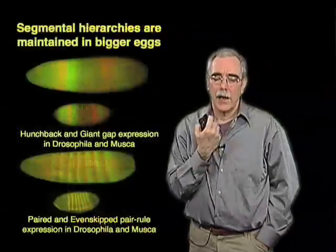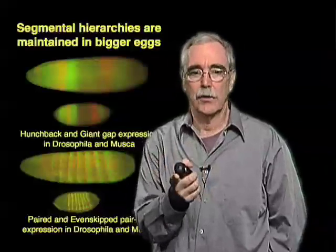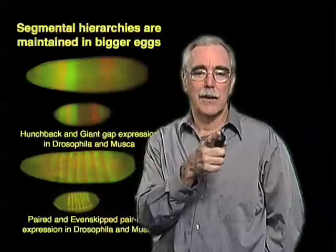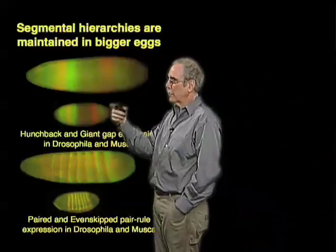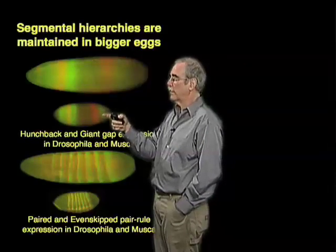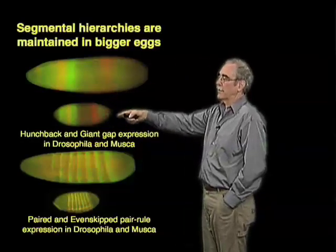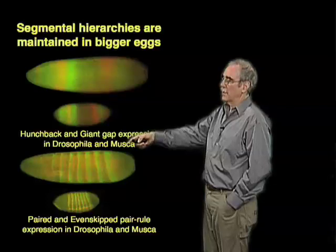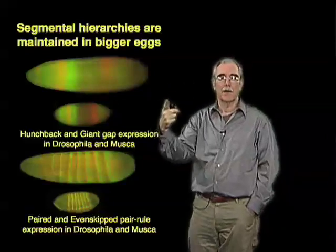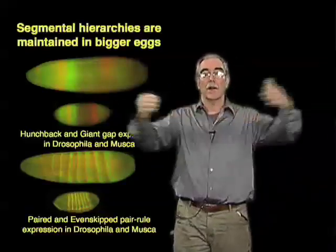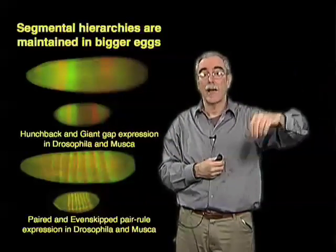If you look at transcription, the other remarkably similar thing between all these insects — even though their sizes are different — is that all of them activate transcription at this critical two-hour period in response to bicoid. And if you look at the patterns of gene expression, say hunchback or giant, the two different gap genes in Drosophila or Musca, or pair-rule genes like paired or even-skipped, they show exactly comparable scaled patterns. Even though the eggs are bigger and the cells are bigger, the patterns per cell are exactly the same.